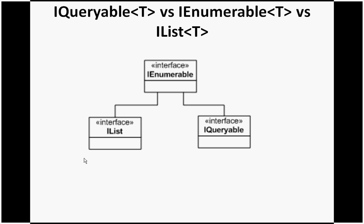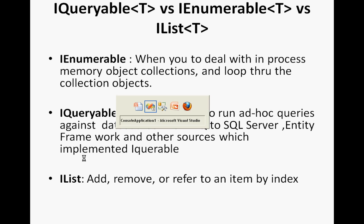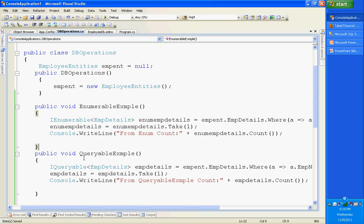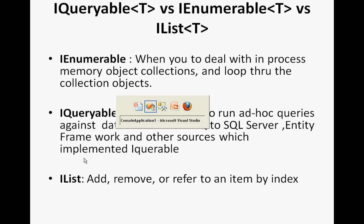So if we can identify what exactly IQueryable does additionally over IEnumerable, and what IList does more than IEnumerable, then we can easily identify what to use and when to use it. Straight away I'll show you an example, and after that IList will come to the screen.